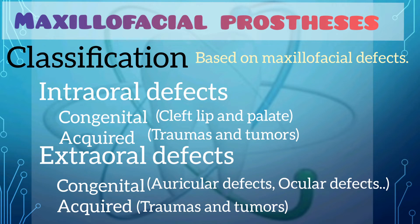Cleft lip and palate, seen in both adults and infants, comes under congenital intraoral defects, while traumas and tumours in maxillary and mandibular areas are acquired intraoral defects. Auricular, ocular and syndromatic defects are congenital extraoral defects, and trauma and tumours of auricular, orbital, nasal and auricular areas come under acquired extraoral defects.